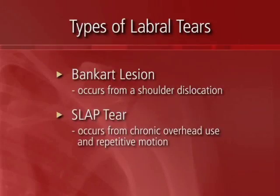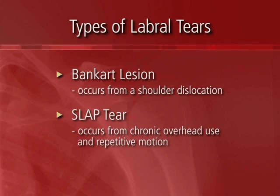The second most common type of tear is what's called a SLAP lesion, or a superior labral tear, which is the labrum on the top of the socket. That occurs more from chronic repetitive overuse, such as an overhead athlete like a pitcher, a tennis player, or a javelin thrower. People with repetitive motion can develop a superior labral tear.